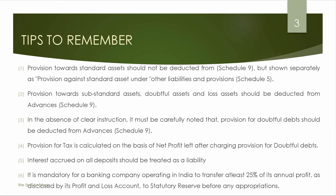Because we have a risk for Standard Assets. The second point is: provision towards Sub-Standard Assets and provision for doubtful debts should be deducted from Advances. Provision for tax is calculated on the basis of net profit left after charging provision for doubtful debts. We will calculate the net profit, deduct provision for doubtful debts, then calculate provision for tax.